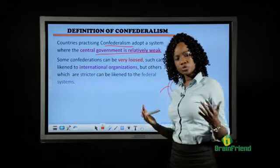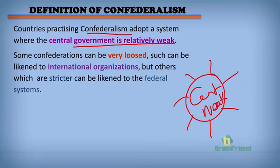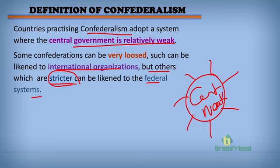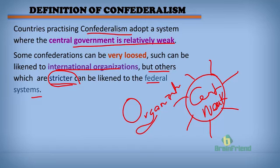In confederalism we have the loose form and the strict form. Countries that practice confederalism in its loose form can be compared with international organizations like the AU, where countries join and become members and can actually leave without any problem. But in countries that practice it in a stricter way, it is quite hard to pull out — we compare that with the federal system. Countries practicing the strict form of confederalism cannot easily pull out, and the central government is not as weak.